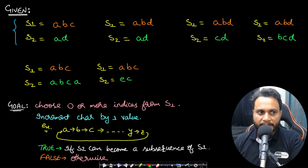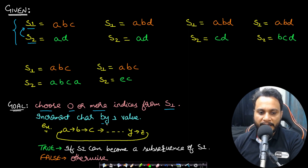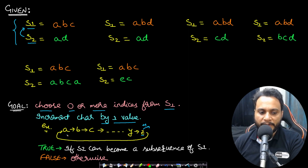Let's look at Example 1: string 1 is 'abc' and string 2 is 'ad'. I want to find out if s2 can be made a subsequence of s1, given that we can choose 0 or more indices from s1 and increment the character by one value. The increment follows the order a, b, c, and so on till z, and incrementing z by 1 gives a because they are cyclic in nature.